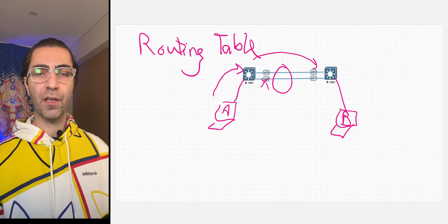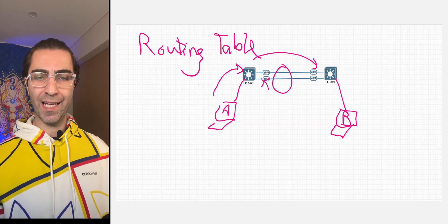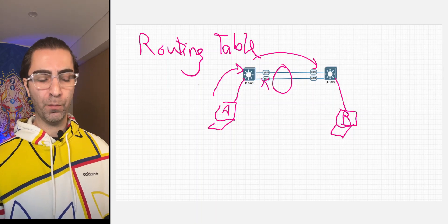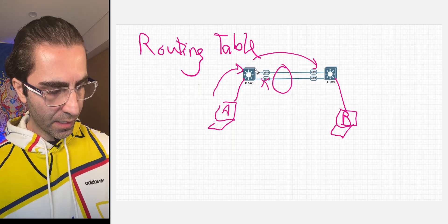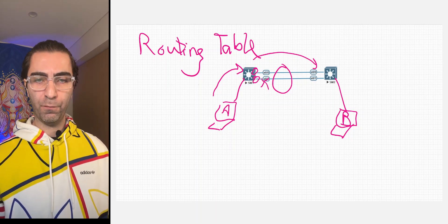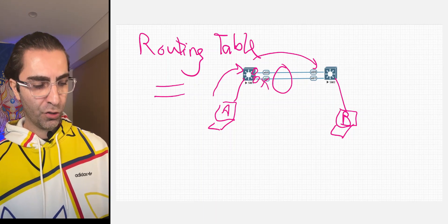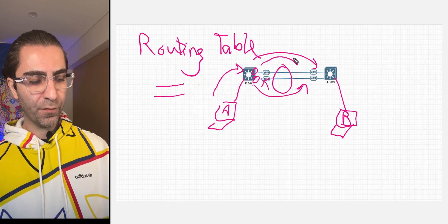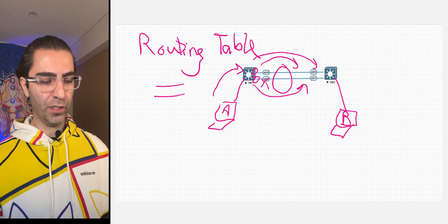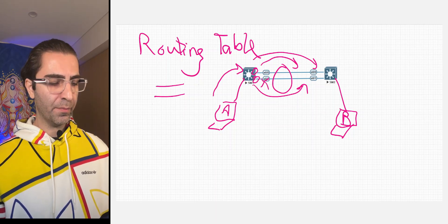If you want to configure a Layer 3 port channel, your switch must be a Layer 3 switch, which means it has to support Layer 3 interfaces — we call them MLS or multi-layer switches. When you have Layer 3 interfaces, spanning tree will not block your redundant links. If you configure routing properly, your switch will have two entries in the routing table for the same destination, so you can benefit from redundant links and load balance your traffic. Based on Cisco's recommendation, it's better to configure these redundant links in a Layer 3 port channel for better performance.